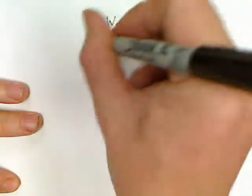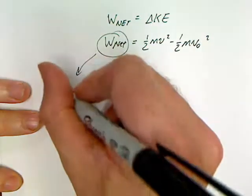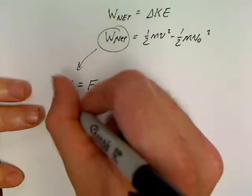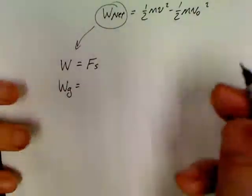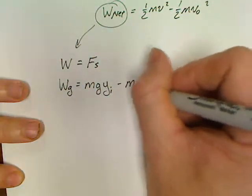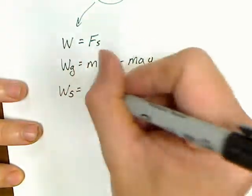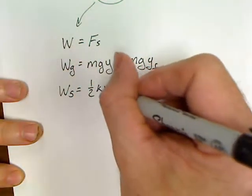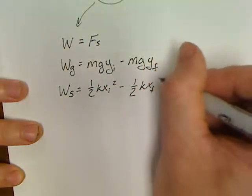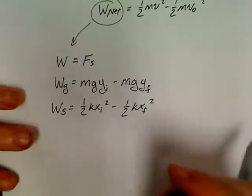Work net equals one-half mv² minus one-half mv₀². All right, so we can do that. Now in terms of work, what makes up this work? This work can be just a plain work, an Fs. This work can be work done by gravity if you've got something going up or down a hill: mgy_initial minus mgy_final. This work can be done by spring: one-half kx_i² minus one-half kx_f².